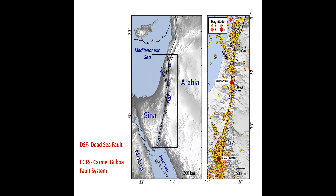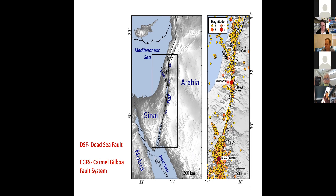On the right you can see the location of earthquakes in the last 35 years in the Levant area. Most earthquakes occur along the Dead Sea Fault, with some within the Sinai Plate and some along the Carmel-Gilboa Fault system. I'm also presenting the two large earthquakes from the last century: the M6.3 1927 Jericho earthquake and the M7.2 1995 Nueba earthquake in the Gulf of Eilat/Aqaba.